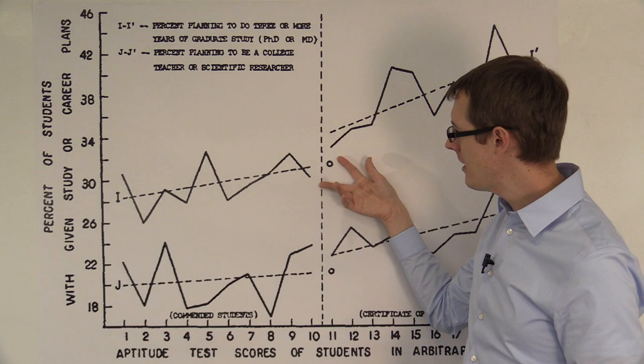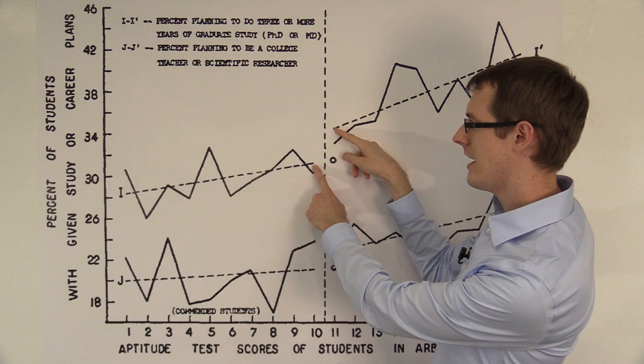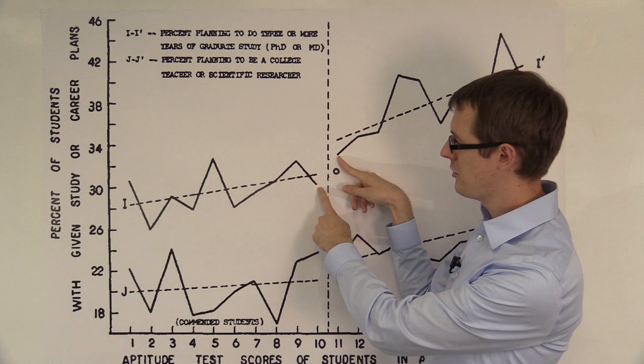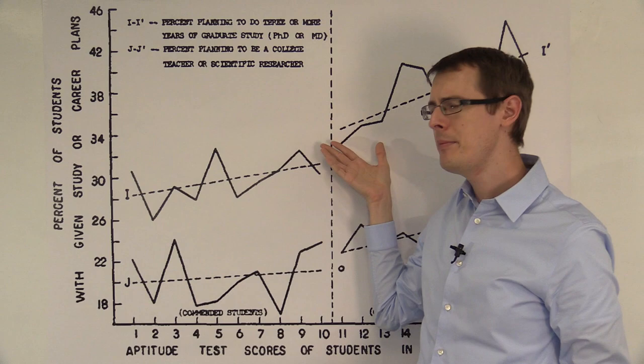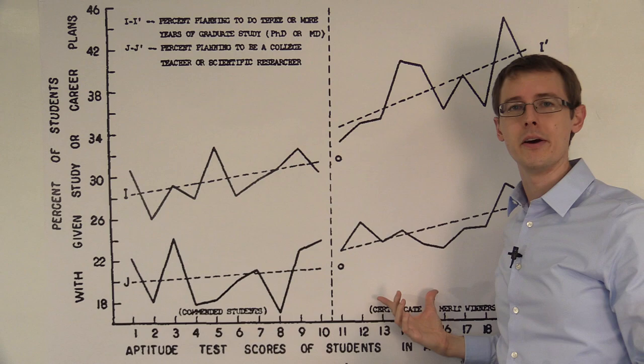Up here, for whether you plan on going to graduate school or not, if you look at the regression lines, there's about maybe a 3% to 4% difference, and the same thing's true if you do the nonparametric analysis and just look at the average for 10 versus the average for 11. So that suggests there is a little bit of a treatment effect, but not an enormous one, of getting the certificate of merit and therefore getting public recognition on whether you plan on going to graduate study.